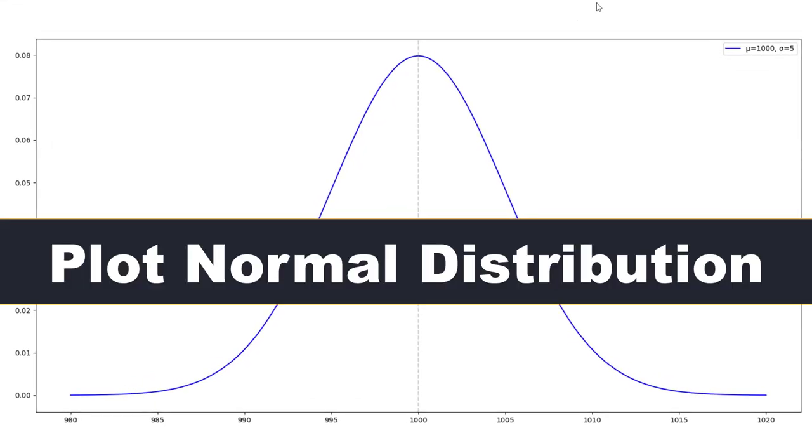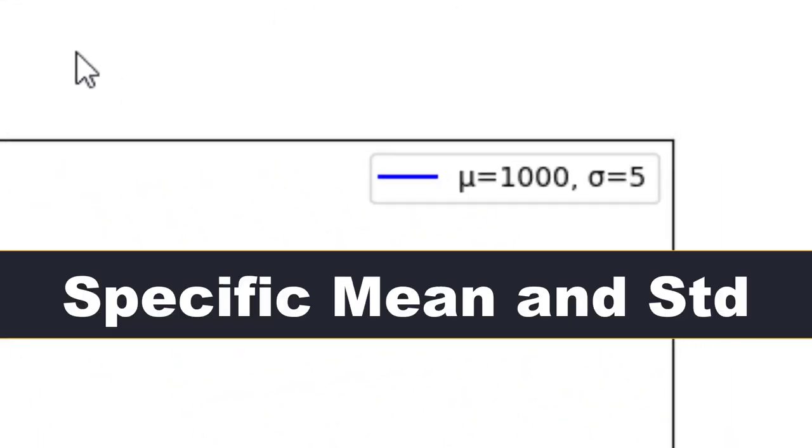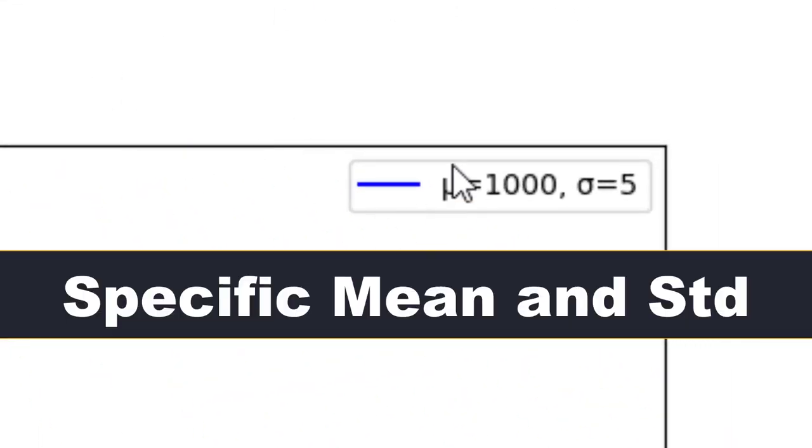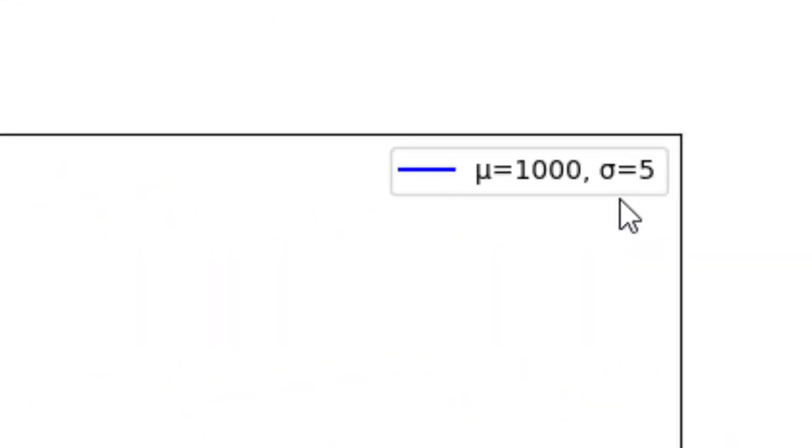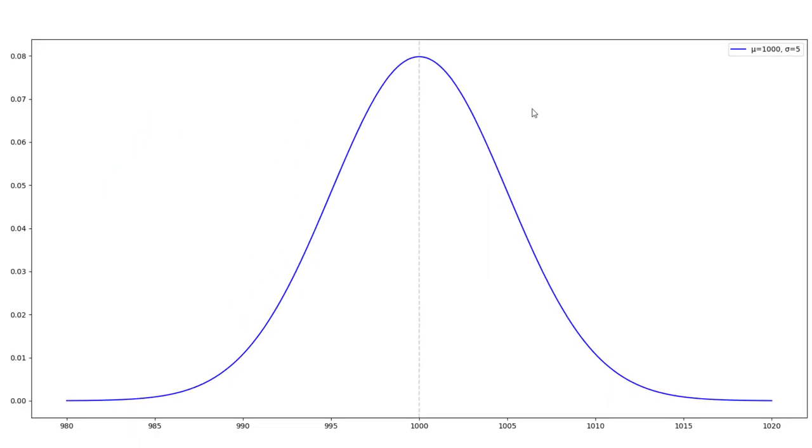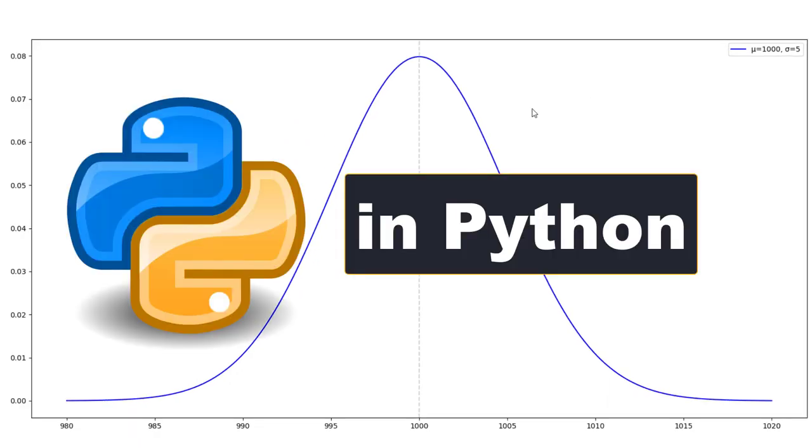In this video, we want to plot a normal distribution with a specific mean and a standard deviation in Python programming language.